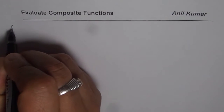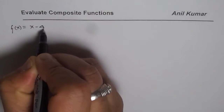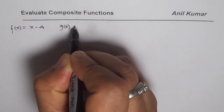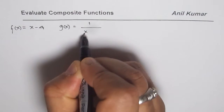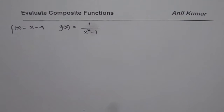I am Anil Kumar and in this video we will see how to evaluate composite functions and understand their domain and range. When we say composite functions we are talking about two or more functions. Let us consider simple functions: a linear function f of x equals x minus 4, and g of x equals 1 over x squared minus 1, a rational function. We will use these two functions to see how to find composite functions.